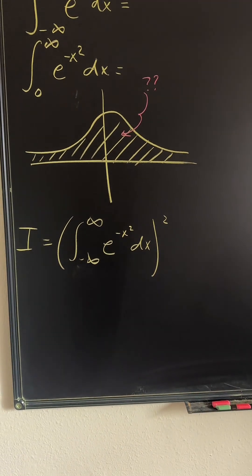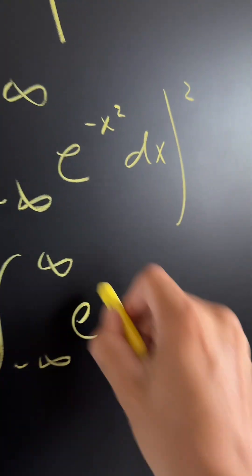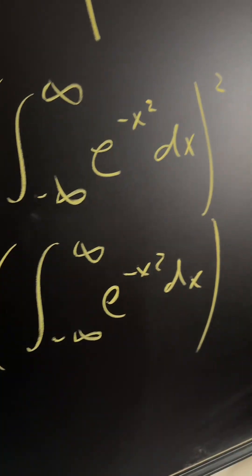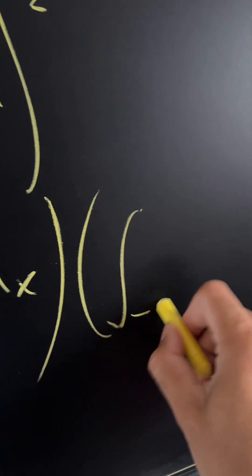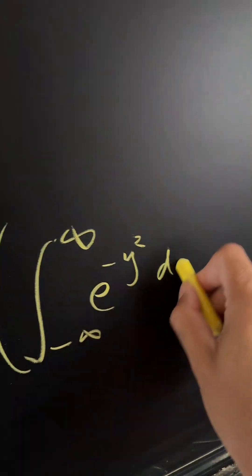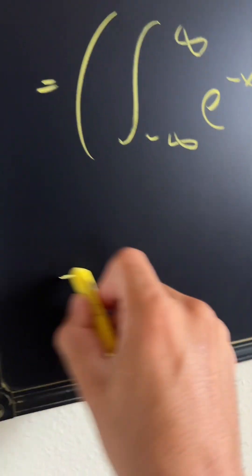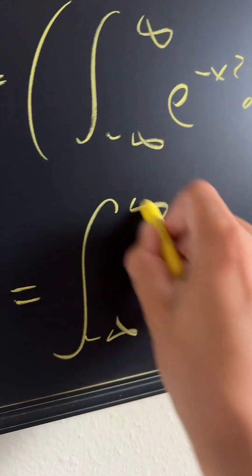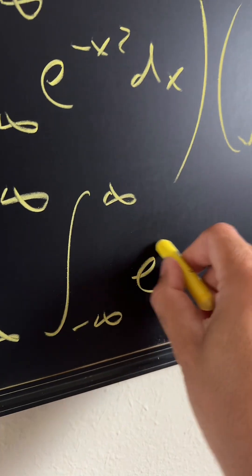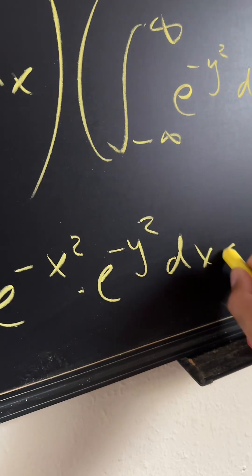We basically have two different integrals. That means this integral from negative infinity to infinity of e to the negative x squared dx is simply going to be multiplied by another integral. I'm going to change the variable here — since they're simply just variables — so I'm going to use e to the negative y squared dy. If we multiply these two together, we get a double integral: the integral from negative infinity to infinity times the integral from negative infinity to infinity of e to the negative x squared times e to the negative y squared dx dy.